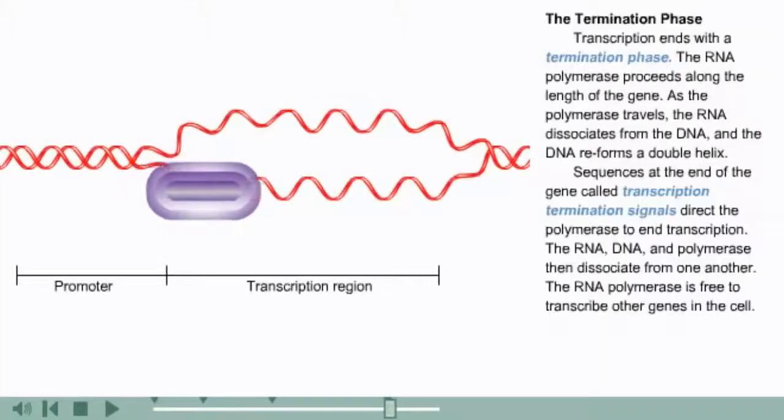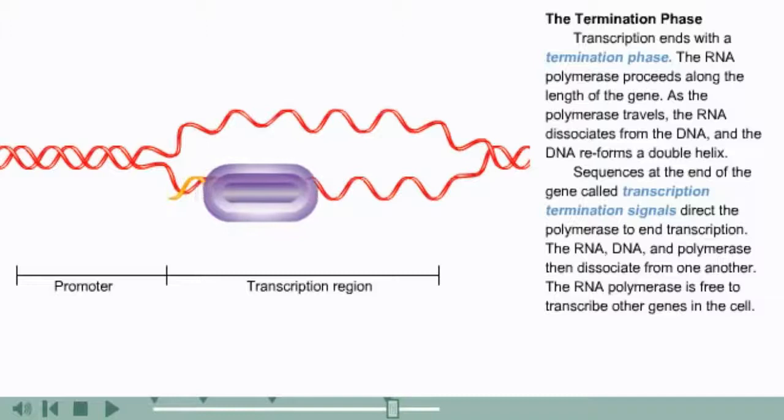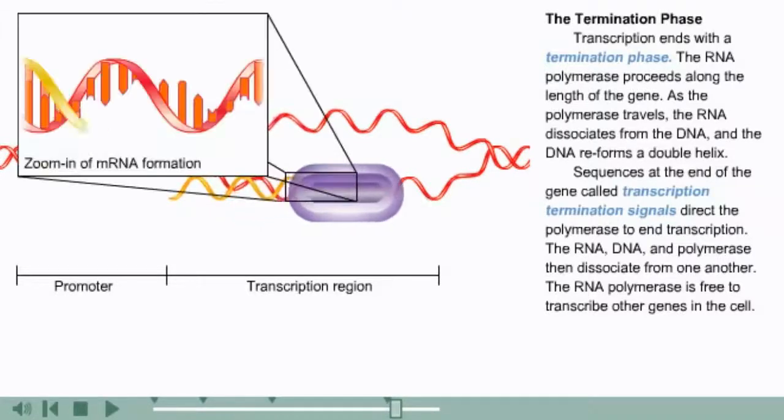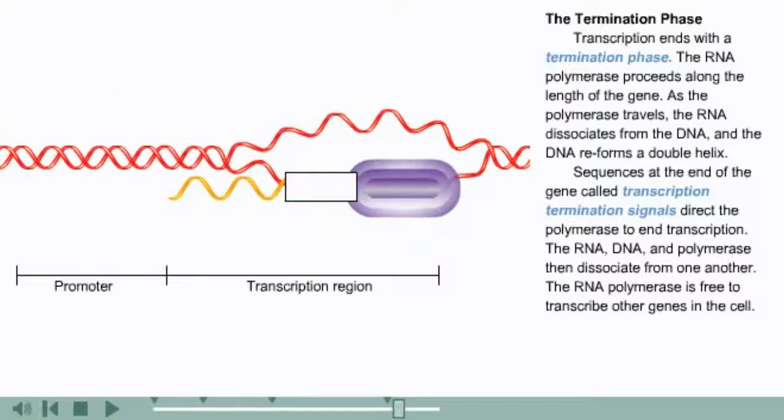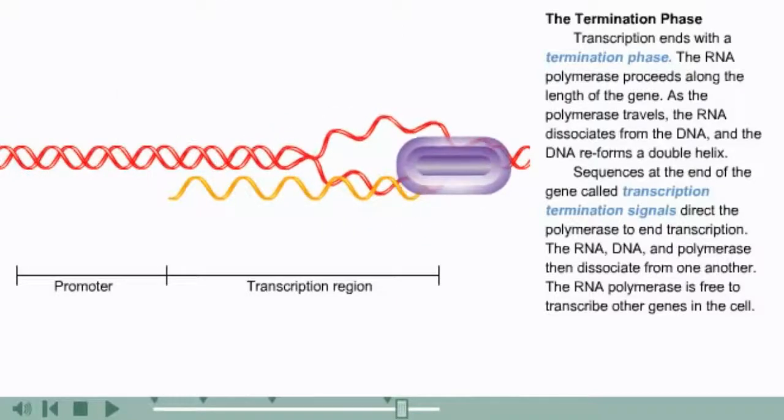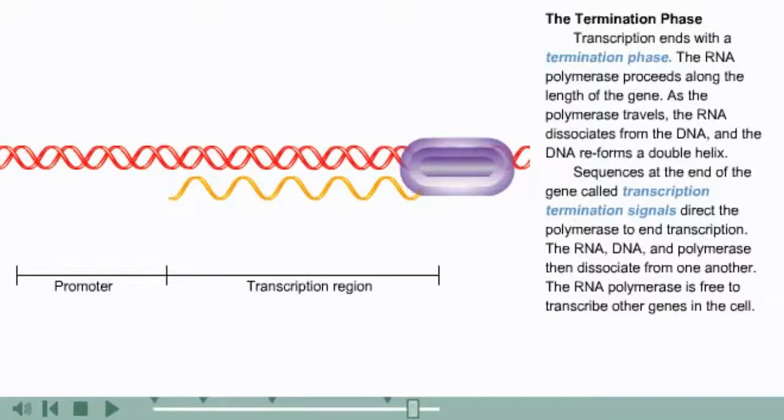Transcription ends with a termination phase. The RNA polymerase proceeds along the length of the gene. As the polymerase travels, the RNA dissociates from the DNA and the DNA reforms a double helix. Sequences at the end of the gene